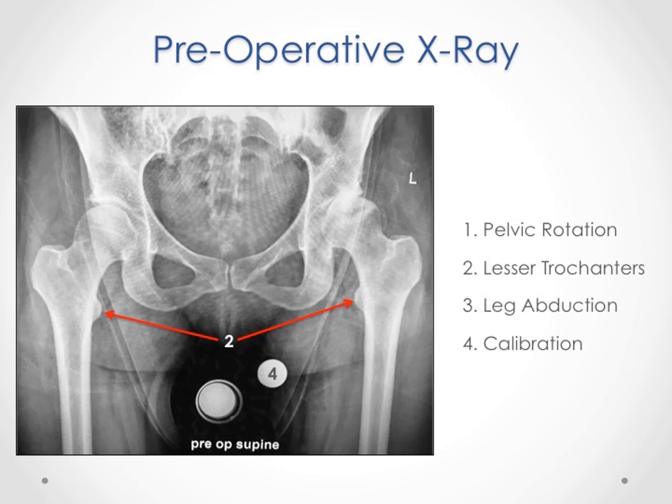Number one, there's pelvic rotation. Number two, foot rotation or the position of the lesser trochanters. Number three, the position of the leg or leg abduction. And four, calibration. And I'll talk about each of these in turn.